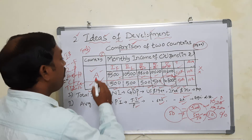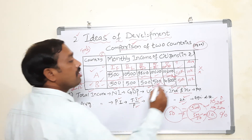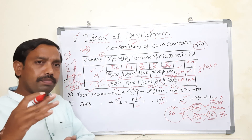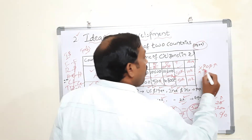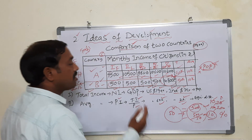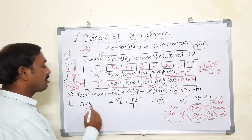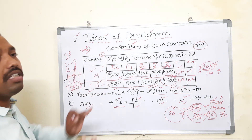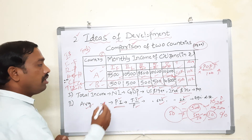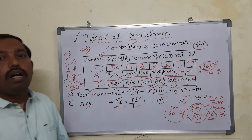This shows the gap between rich and poor. Why do we need both concepts — national income and per capita income? National income alone has a problem: as population increases, the family or country's total income may appear to increase, but that is not a good measure of development. So we developed the concept of per capita income. Per capita income tells us not just how much is earned, but how it is distributed — whether people are getting equitable distribution and sufficient money.